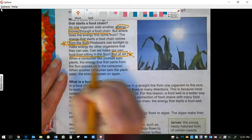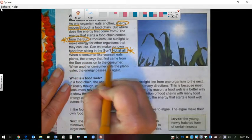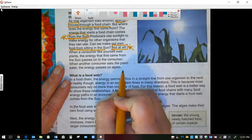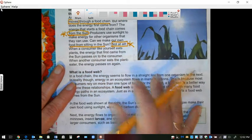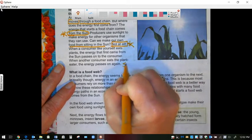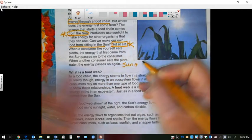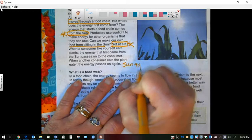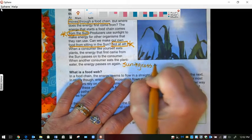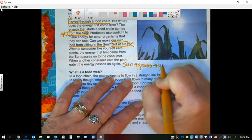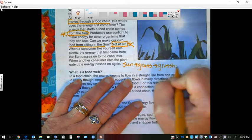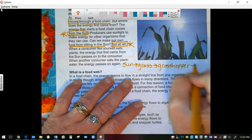When a consumer like yourself eats plants, the energy that came from the sun passes into the consumer. When another consumer eats the plant, the energy passes on. In other words, the sun, it gives energy to the grass. And then the energy that the grass has, it gives that energy to a grasshopper.